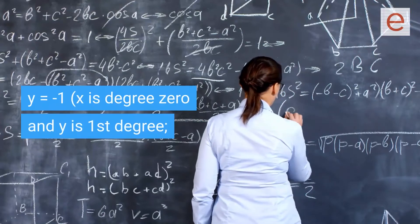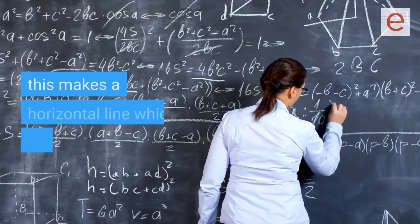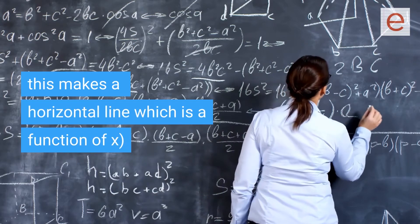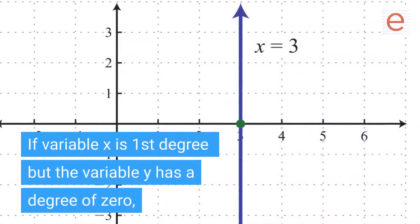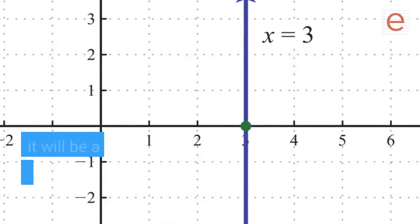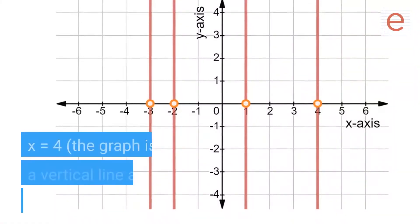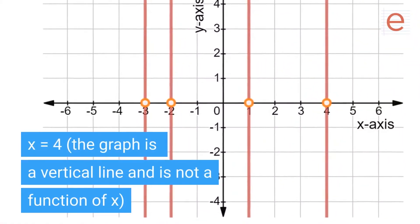y equals negative 1: x is degree 0 and y is first degree, this makes a horizontal line which is a function of x. If variable x is first degree but the variable y has a degree of 0, it will be a linear relation but not a function of x. Example: x equals 4, the graph is a vertical line and is not a function of x.